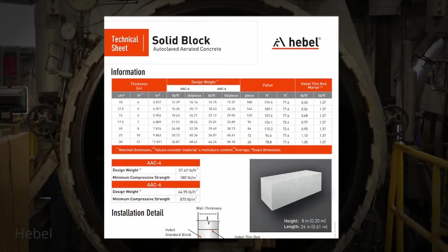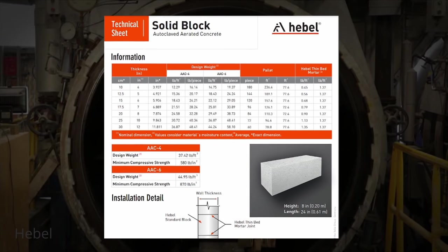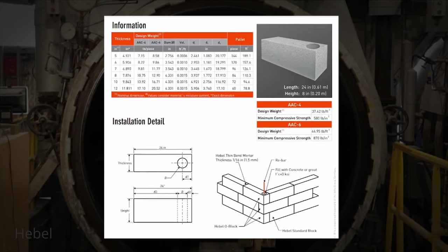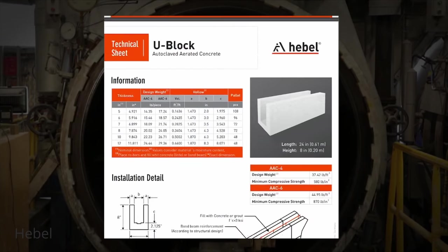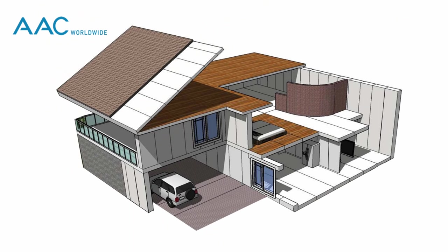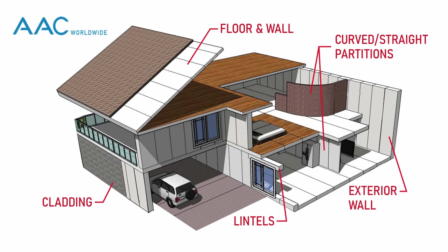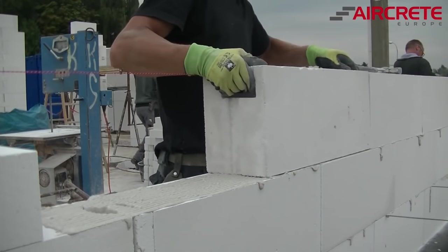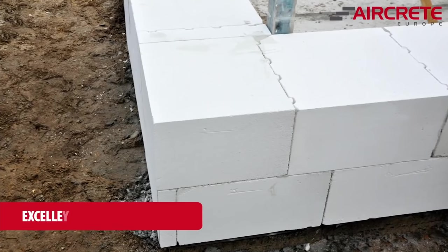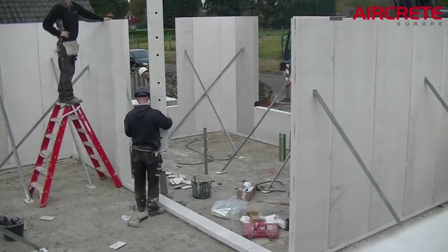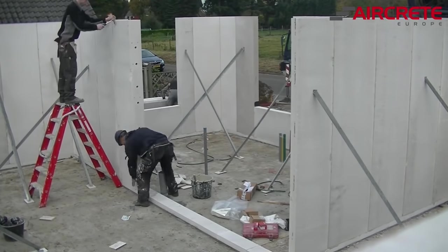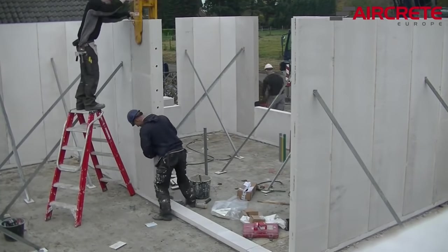Aerated concrete is a very versatile product that can be formed into solid blocks, cored blocks, and U-blocks. They can also be formed into floor and wall panels, curved or straight partition panels, exterior wall panels, lintels, and cladding panels. Installation is very similar to traditional masonry construction — cured blocks or panels are joined with thin-bed mortar.